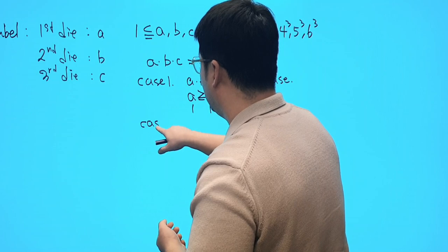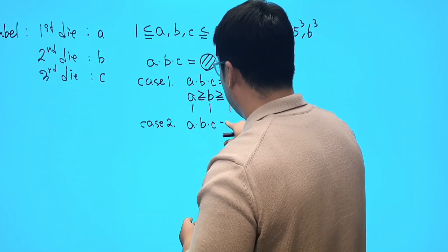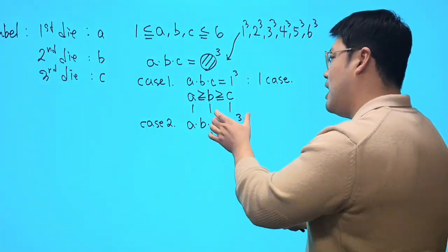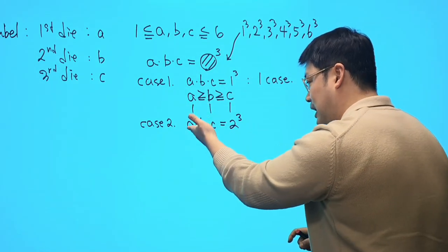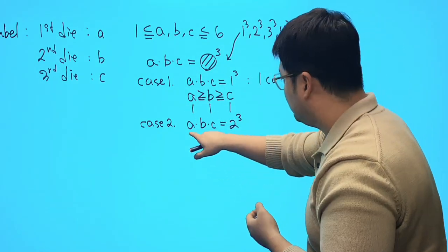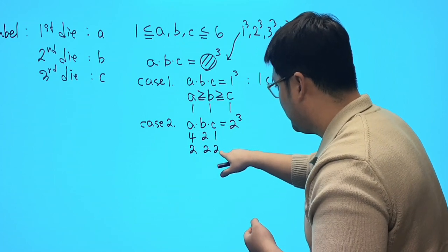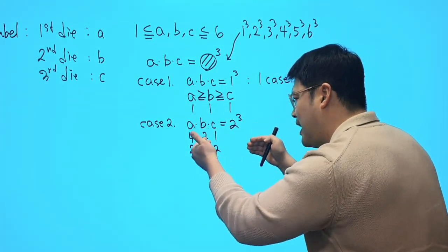And case number two. Well, what if we multiply A, B, and C to get two cubed? And that's going to be eight. Remember, I'm not going to relax this condition. I'm going to impose this condition down on here. And we get four and two and one and two, two and two. Now, by imposing this condition, we can find out huge categories.